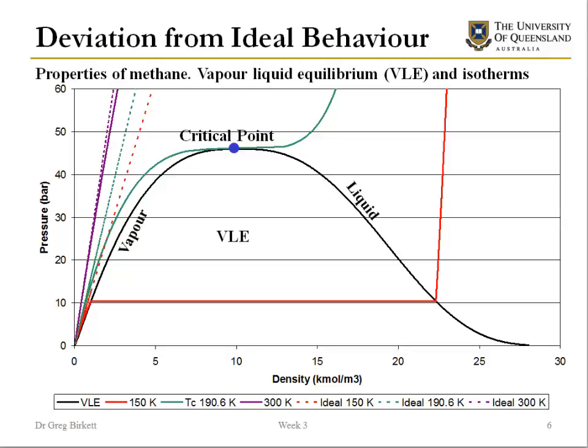Intermolecular interactions affect the properties of fluids — if they didn't, we wouldn't get condensed phases. In this plot we have a series of isotherms for methane. Starting from the left-hand side, we have isotherms at well above the critical temperature, with the isotherms at 300 Kelvin shown here.